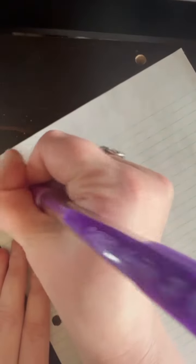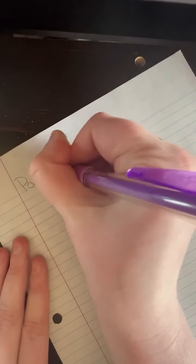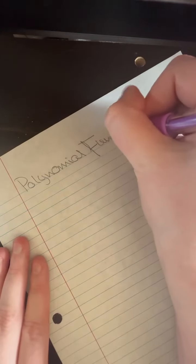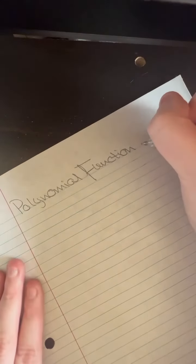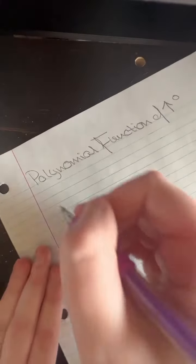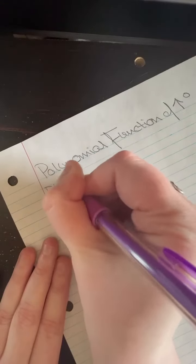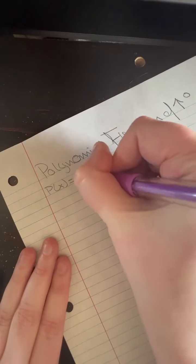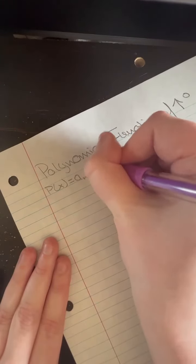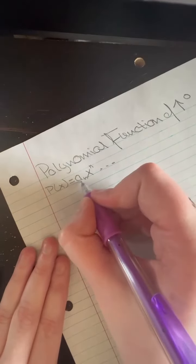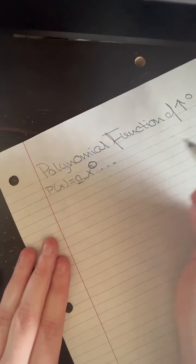I'm going to try to show polynomial functions of a higher degree. Polynomials typically look like this: we have a coefficient a sub, and then x with an exponent. Obviously there's more, but we really pay attention to this a and this exponent here.